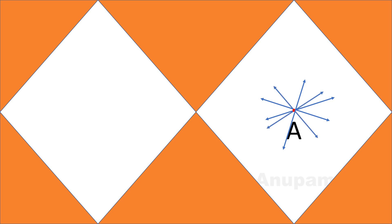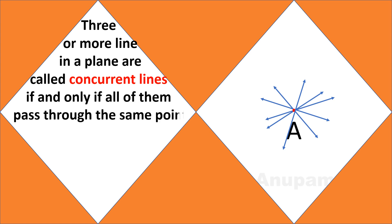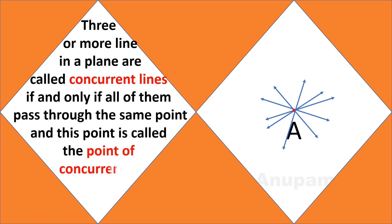Three or more lines in a plane are called concurrent lines if and only if all of them pass through the same point A, and this point is called the point of concurrence.